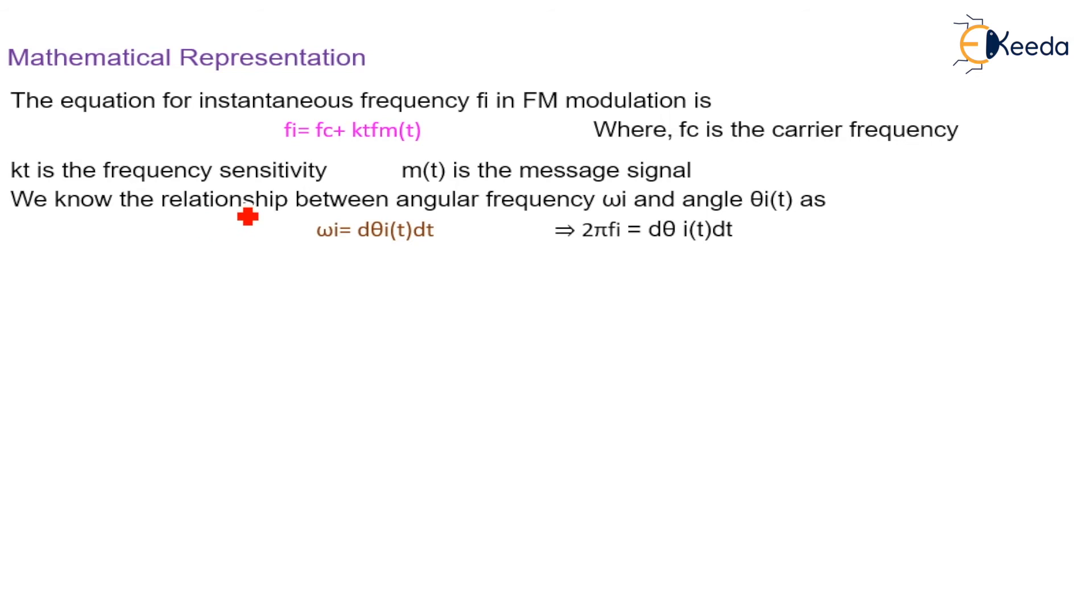The relationship between the angular frequency ωi and θi(t) is ωi equal to d θi(t) dt. This indicates 2πfi. Putting the value of omega, 2πfi equal to d θi(t) dt.